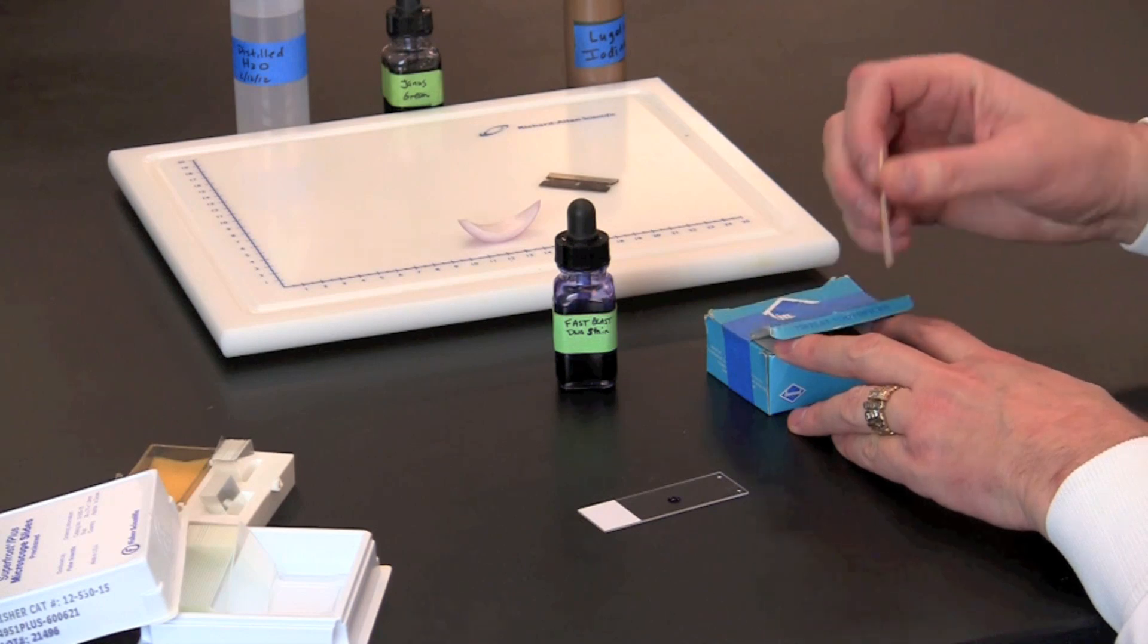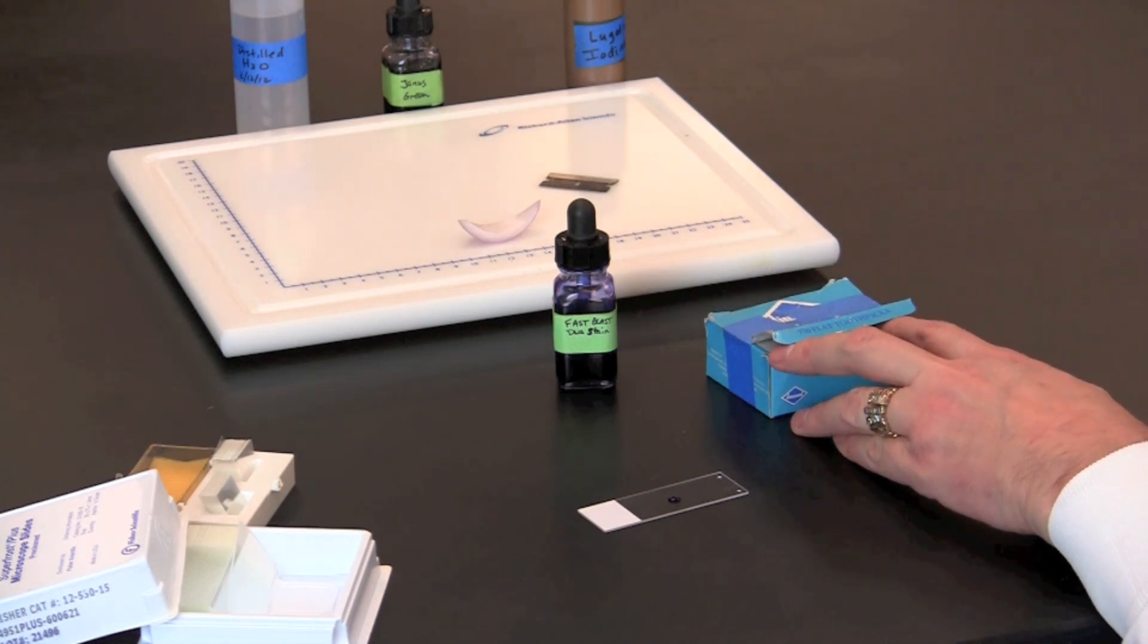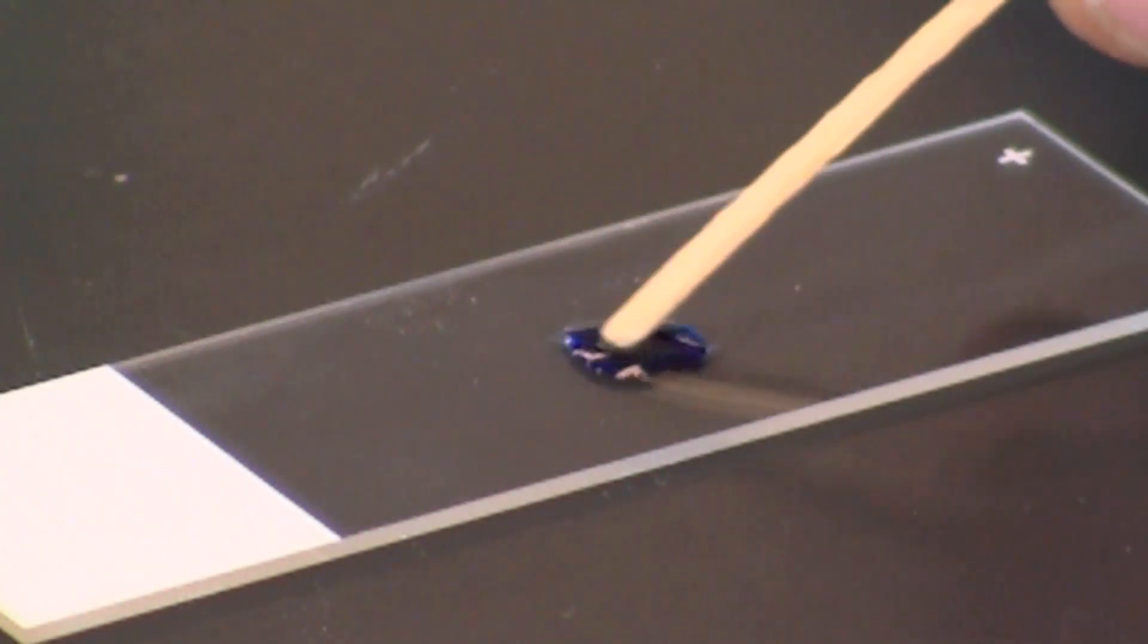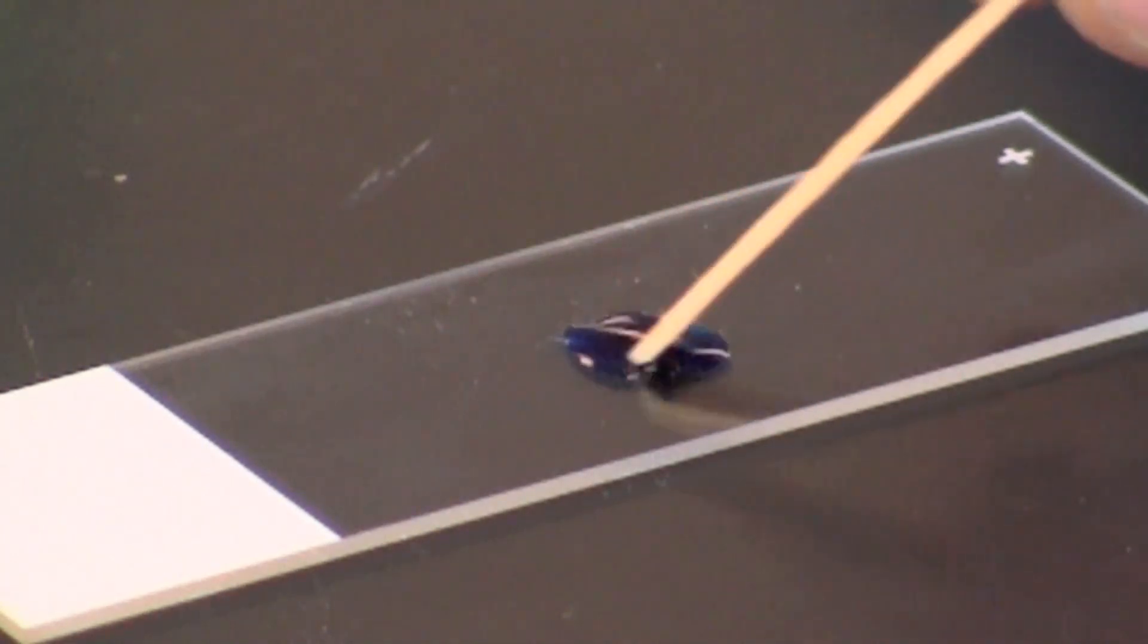Use the blunt end of a toothpick to scrape the inside of your cheeks. Place the toothpick into the drop of stain on the slide and swirl it to release the cells into the stain.